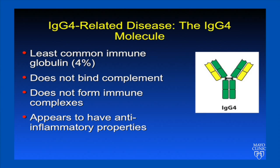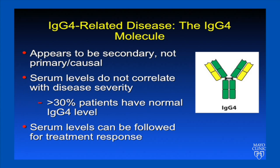What do we know about the IgG4 molecule? It's the least common immune globulin, and unlike the other immune globulins, it does not bind complement, it does not form immune complexes, and overall appears to have anti-inflammatory properties. For these and other reasons, its role in IgG4-related disease appears to be secondary, not primary or causal. Serum levels do not correlate with disease severity, and in fact a third of patients may have normal IgG4 levels. Within the individual patient, however, serum levels can be followed for treatment response.